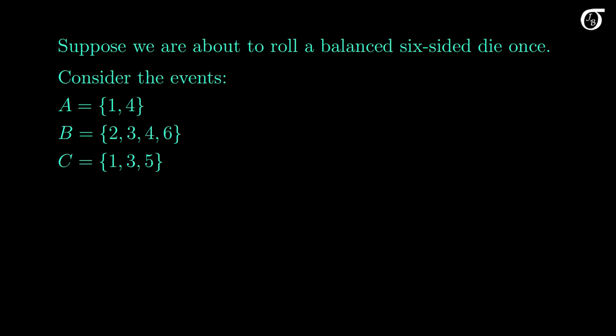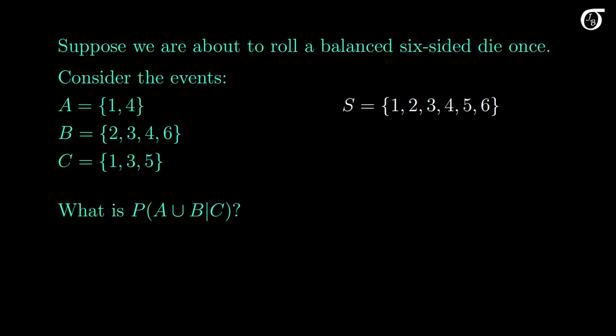Suppose we are about to roll an ordinary balanced six-sided die once and observe the number on the top face, and suppose we defined these events. The sample space is made up of the six possible numbers we can roll, and it's reasonable to assume the six sample points are equally likely. What is the probability of A union B given that event C occurs? Note that what we are conditioning on is to the right of the vertical bar — we are looking for the probability of the union of A and B given that event C has occurred.